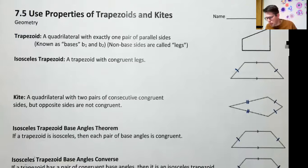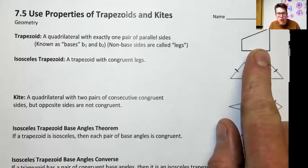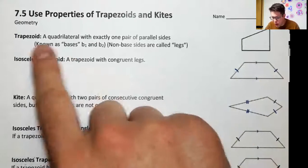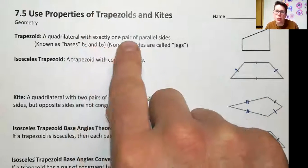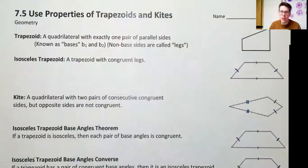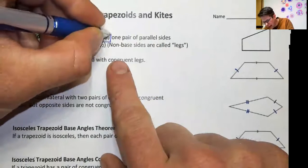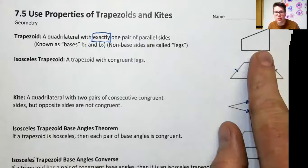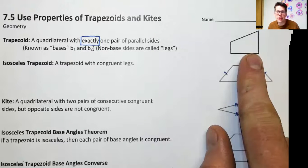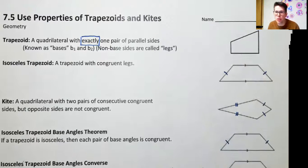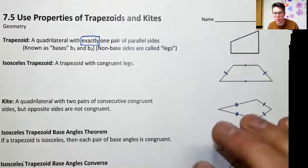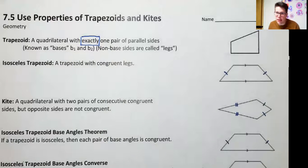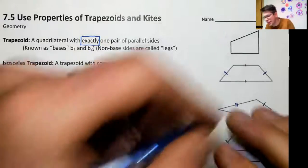Our first shape is the trapezoid. For the trapezoid we have right here, it is a quadrilateral — it has four sides, and it has exactly one pair of parallel sides. The most important word there is 'exactly,' which means you can't bump that up to two and still have it be a trapezoid. It has to be one, and that's it.